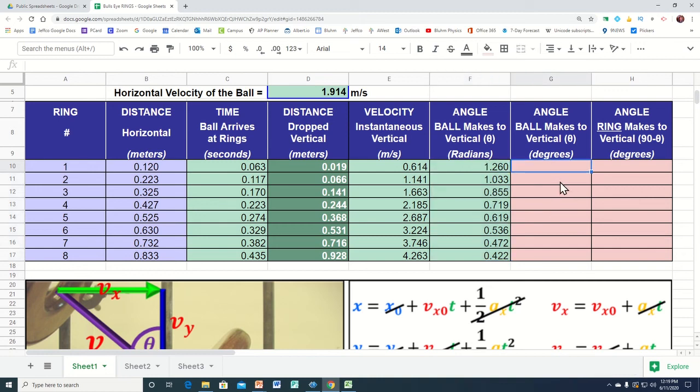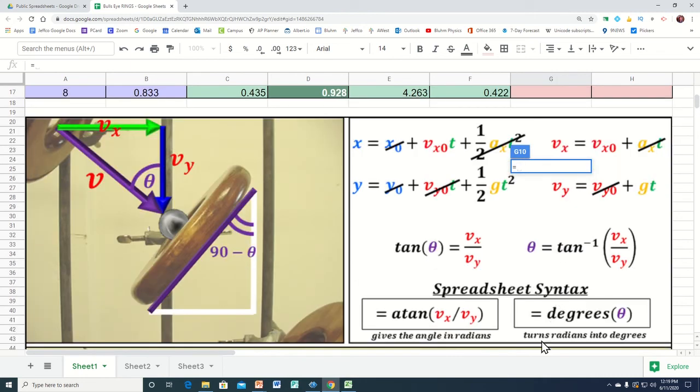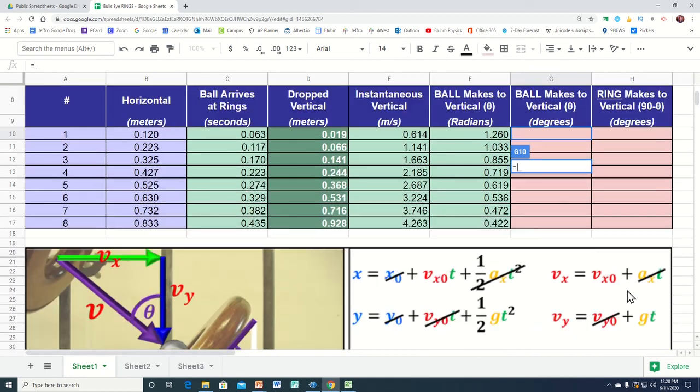Let's go ahead and turn radians into degrees. There is a formula that will turn radians into degrees, and it's just a function where you plug in an angle into the function, and it makes it into degrees. So we're going to say degrees of that radian value. We're going to plug into a function called degrees, and it's 72 degrees. Copy that down, and this is the angle the ball is traveling at any time it goes through a ring.